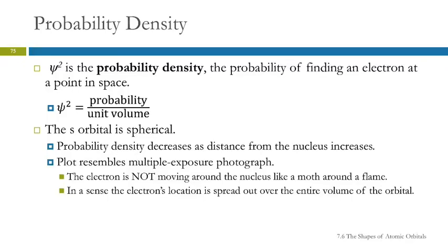So this is the probability density, psi squared. Psi is a wave function. It's the probability of finding an electron at a point in space. That would be equal to probability divided by a unit volume.